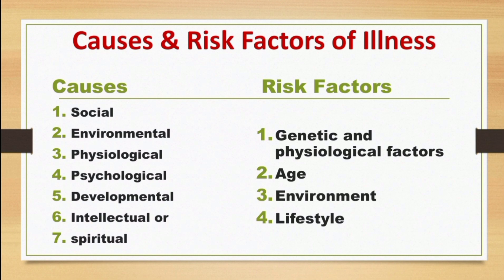Age affects a person's susceptibility to certain illnesses and conditions. Health screenings, immunizations, and counseling are relevant here. For example, premature infants and neonates are more susceptible to infections. Environmental risk factors: the physical environment in which a person works or lives can increase the likelihood that certain illnesses will occur. For example, some cancers are more likely when industrial workers are exposed to certain chemicals or when people live near toxic waste disposal sites.